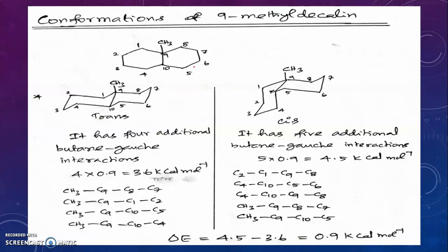Suppose we introduce a methyl group at a fused carbon — carbon 9 or carbon 10. If we introduce a methyl or alkyl group at position 9 or 10, the ring becomes rigid. Both trans-9-methyldecalin and cis-9-methyldecalin are rigid and do not undergo ring flipping. In the trans isomer, introduction of the methyl group at position 9 introduces four additional butane-gauche interactions: CH3–C9–C8–C7, CH3–C9–C1–C2, CH3–C9–C10–C4, and CH3–C9–C10–C5.